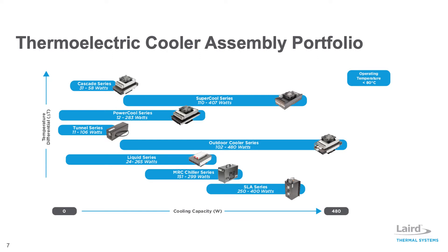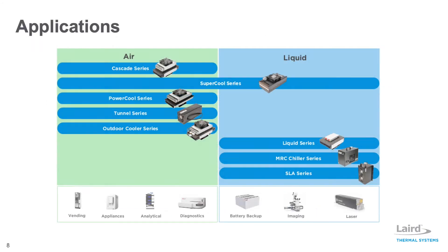Laird Thermal Systems offers a wide product portfolio of thermoelectric cooler assemblies with superior performance, compact form factors, and high coefficients of performance. There are seven distinct thermoelectric cooler assembly product families designed for either a specific cooling capacity range, temperature differential range, or tight space constraint. Many of these assembly series offer multiple heat transfer mechanisms. This portfolio map of the thermoelectric cooling spectrum can guide designers to a particular product family based on desired attributes, indicating which series perform best in air or liquid heat dissipation applications.